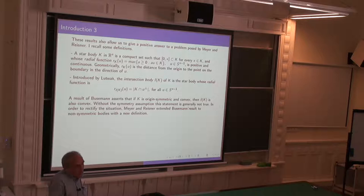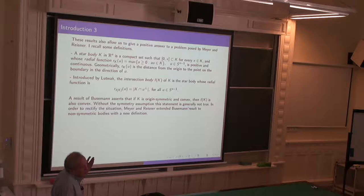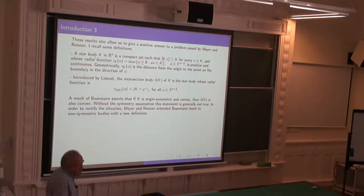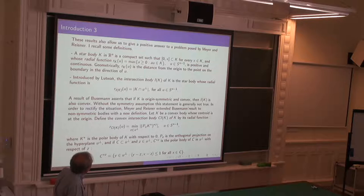There is an old result of Guzman saying that if K is origin symmetric and convex, then I(K) is also convex. But without symmetry, the statement is generally not true. You can try to replace the section through the origin by a section through the centroid — it is not true. If you replace by the maximal section among all sections parallel to some hyperplane, it happens to be true in dimension three, but it's false in higher dimensions. So it is not convex. We wanted to have something convex — and in fact, it's almost convex anyway.